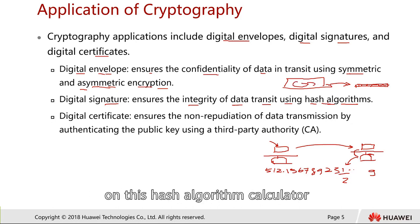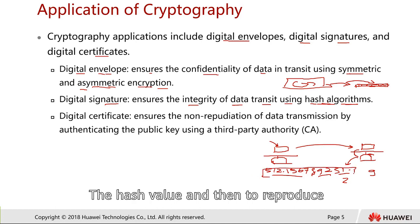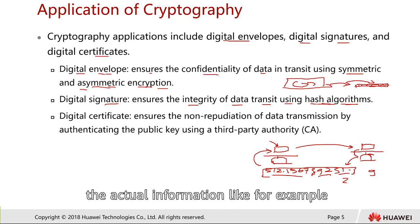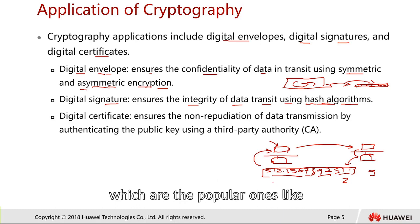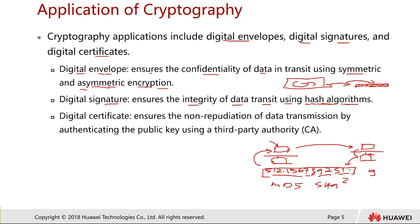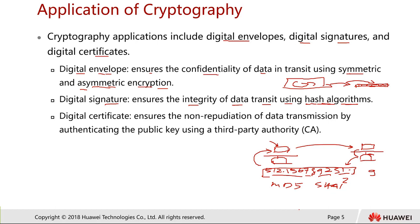This fixed hash value can be transmitted over the network. However — and this is important — you cannot take the hash value and reproduce the original information from it, just as you cannot reconstruct the original parcel from its weight. That is why the hash algorithm was designed this way. Popular hash algorithms include MD5 and SHA, which differ in the number of bits they use.